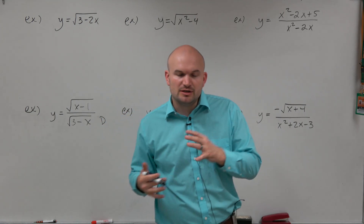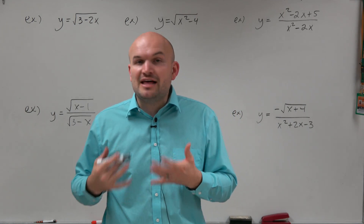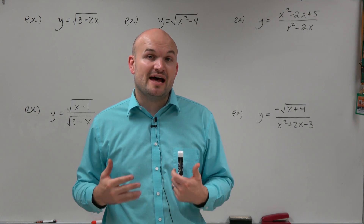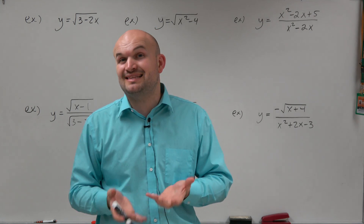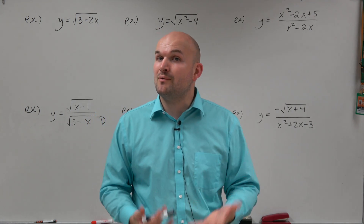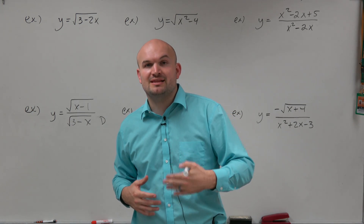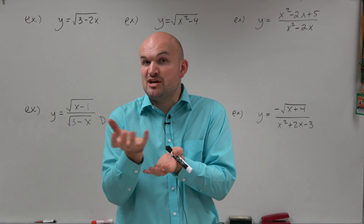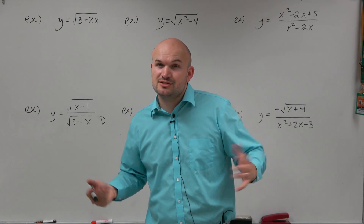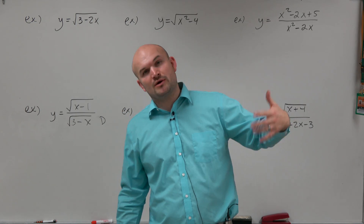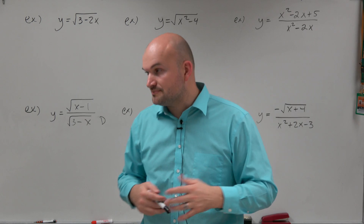When we're dealing with rational and radical functions, the values that are not going to be a part of the domain are the values of x that, for rational functions, make the denominator equal to 0. And for radical functions, are the values that make the radicand — the expression under the radical — negative. Because under the real number system, you can't take the square root of a negative number, and we can't divide by 0.